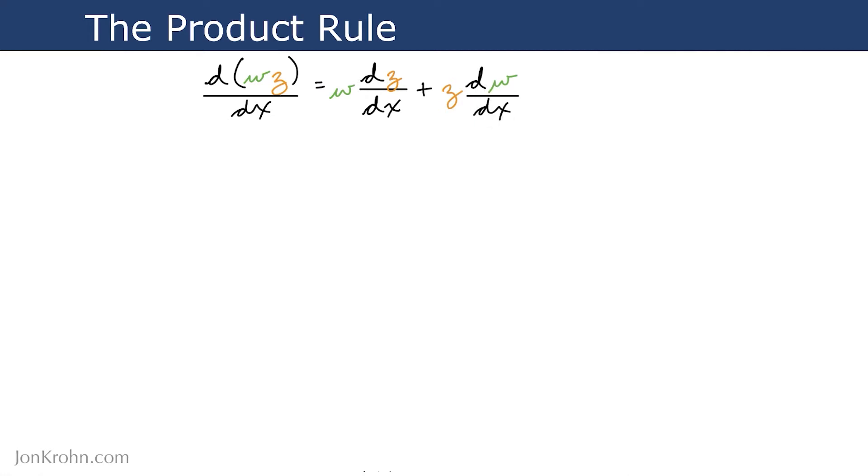The product rule is useful in situations where we have calculations that involve several different rules. Sometimes it enables us to simplify the rules that we're applying, make things more manageable. And it's also useful whenever the product is incalculable pre-differentiation.